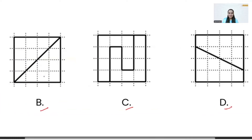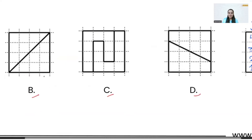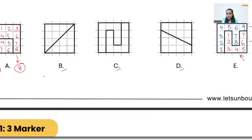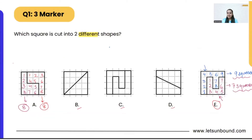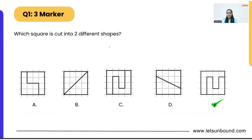So we can say option E is made up of two different shapes and that is our correct answer. But let me also show you another way to understand this better. I'll be switching my camera to demonstrate.